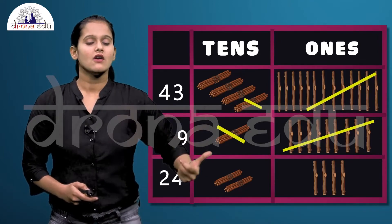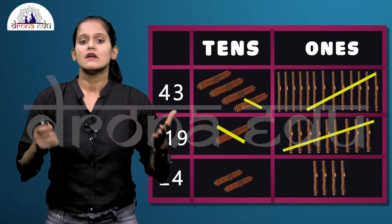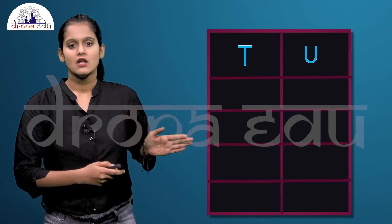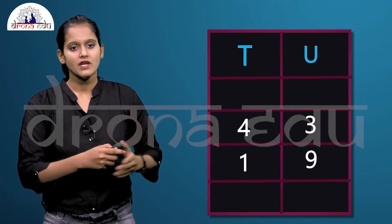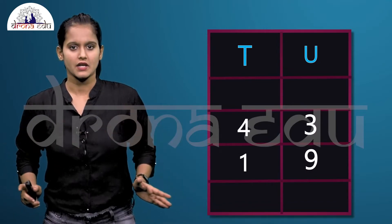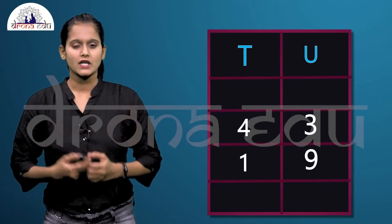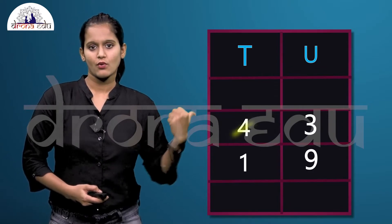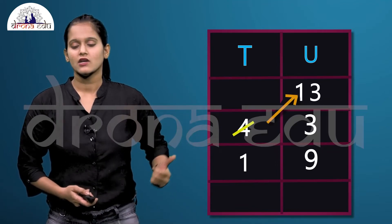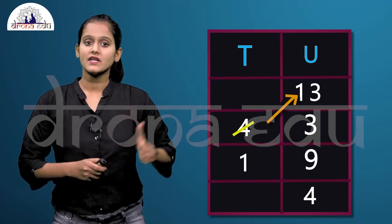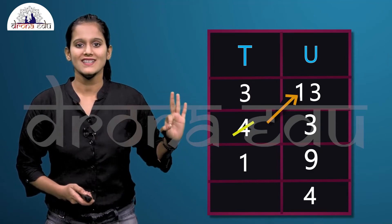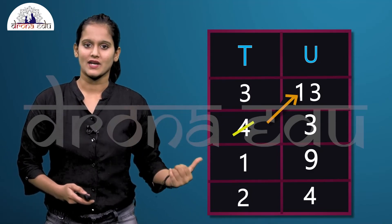The same can be written in a place value chart with units and tens columns. Write 43 and 19. In the units place, three is less than nine, so we do borrowing — borrow one from the tens place, making it 13. Then 13 minus 9 equals four. In the tens place, four becomes three after borrowing, so three minus one equals two. The answer is 24.